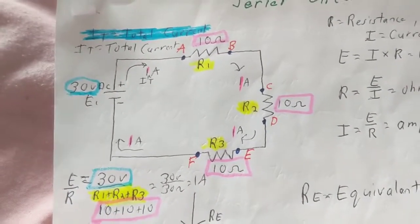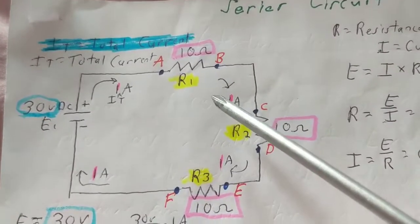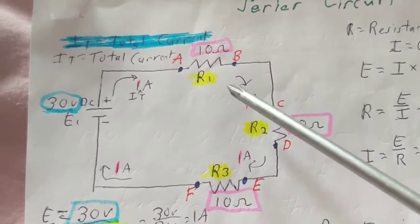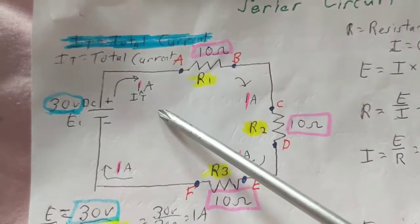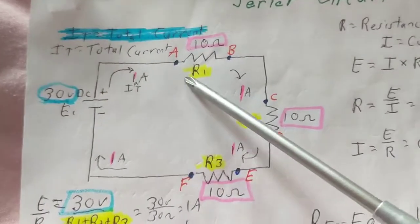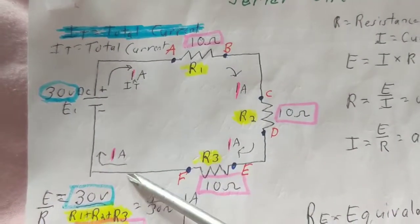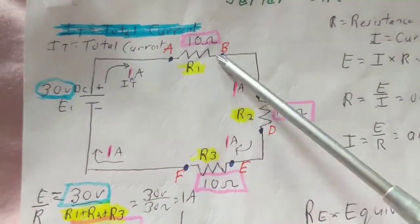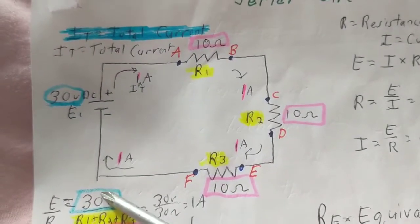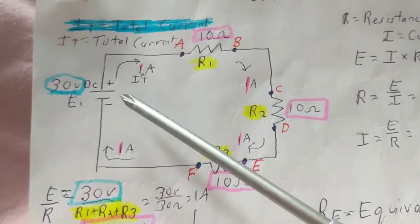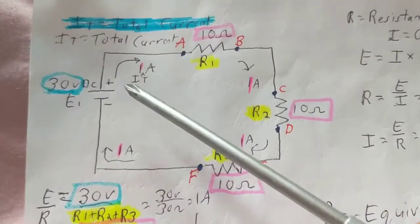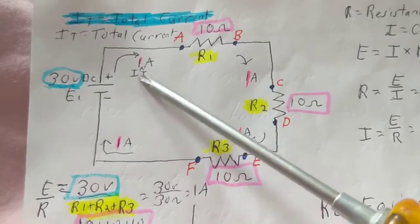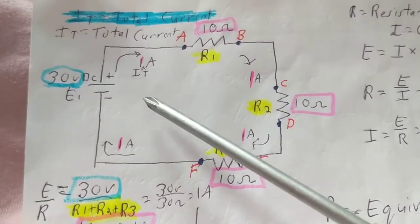Now a resistor is an opposition to current flow. A resistor resists something. Current is the flow of electrons. In order to have that become apparent, you have to have a closed circuit for current to flow. It can flow from positive to minus or minus to positive.